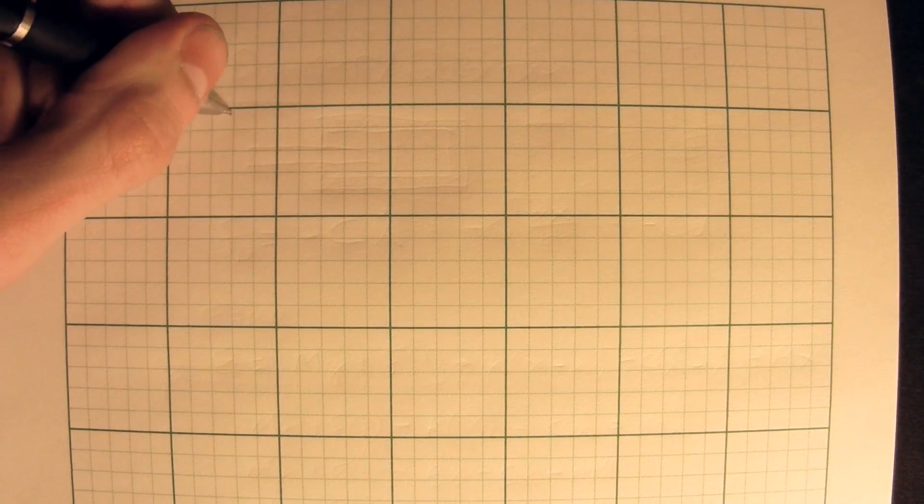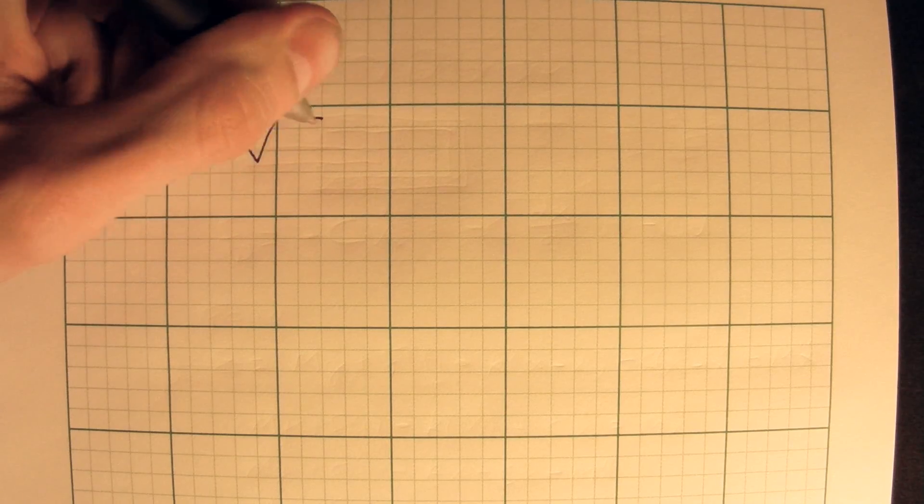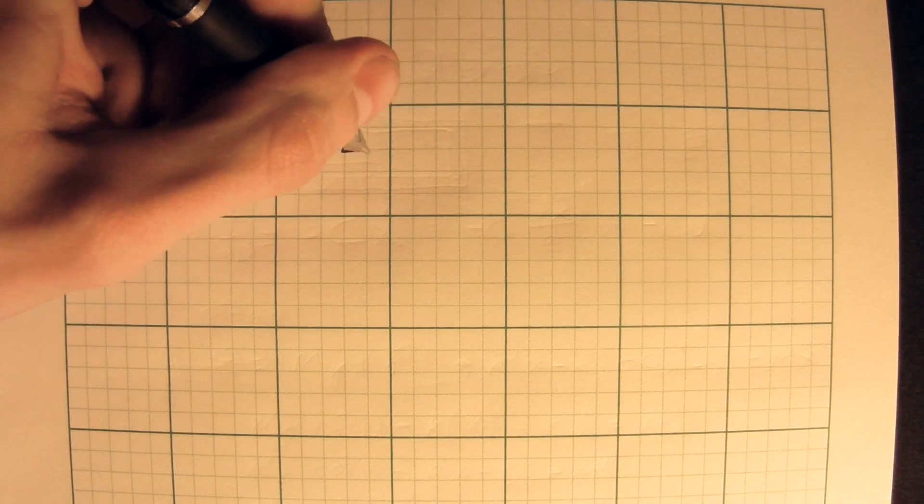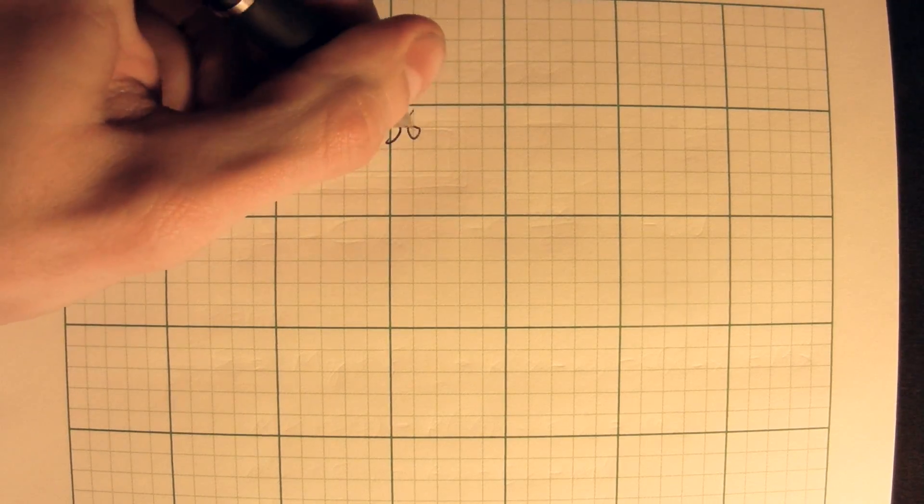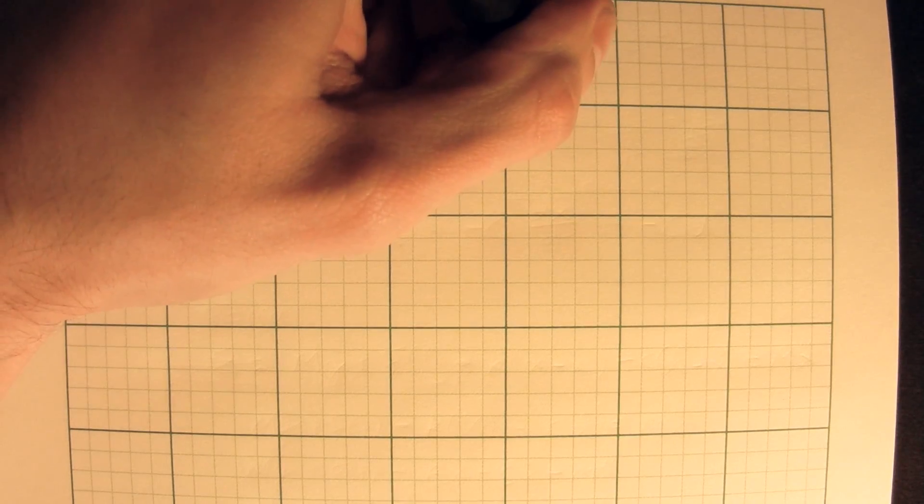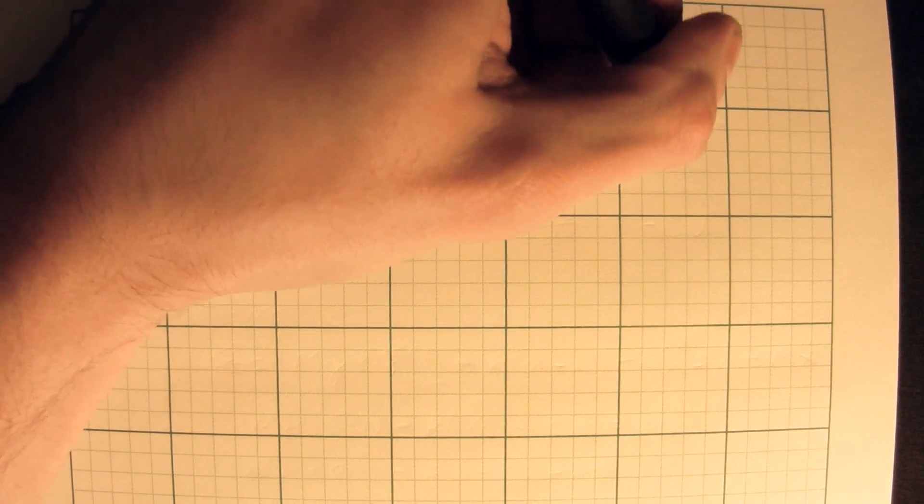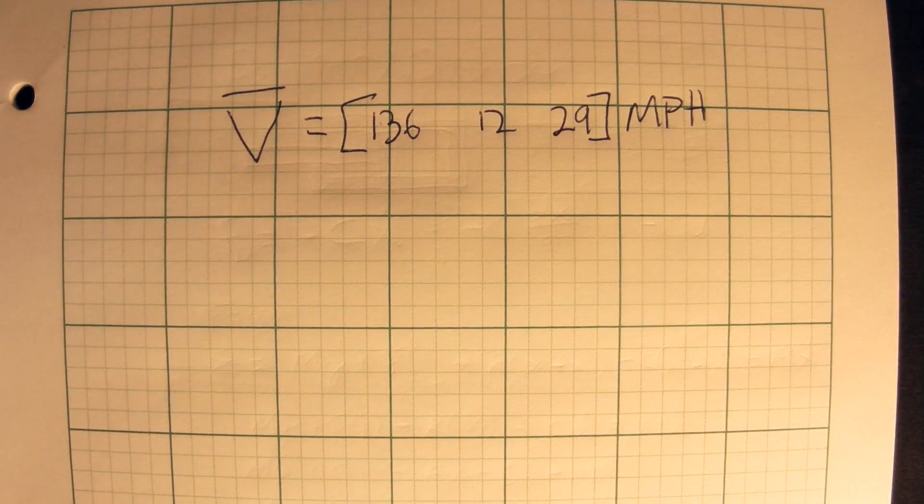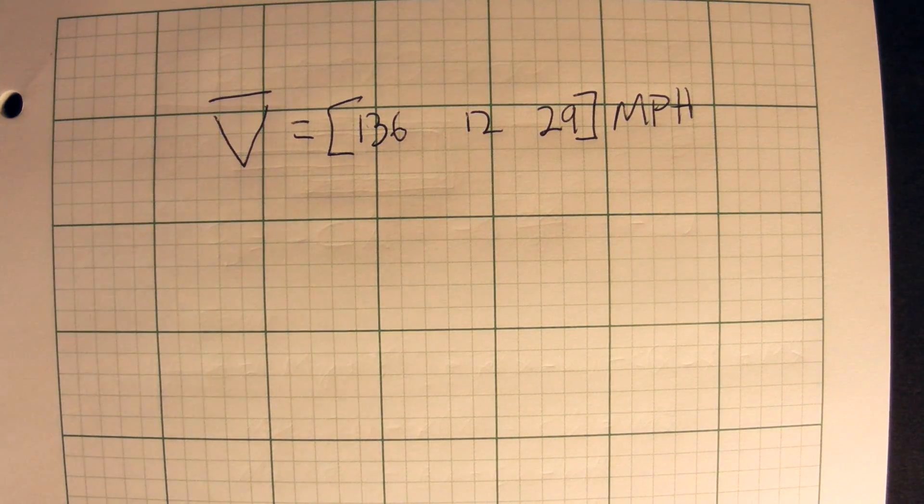So let's say we have a velocity vector v bar. This will be equal to 136, 12, 29. This is in miles per hour. So that's our velocity vector. This is what we're given.